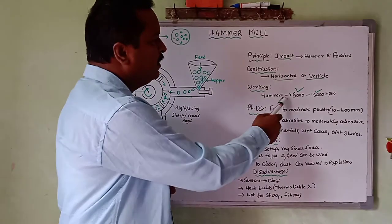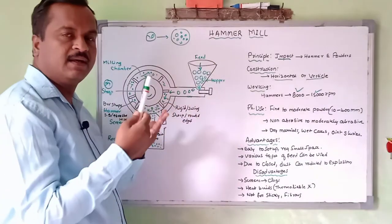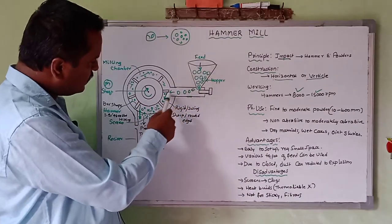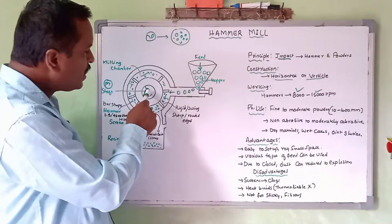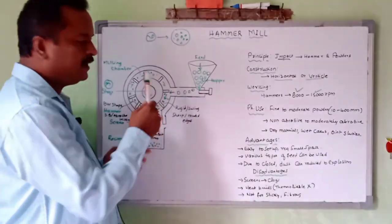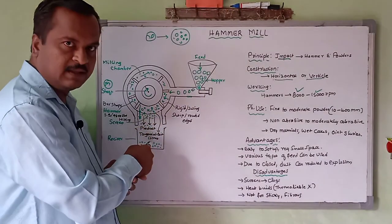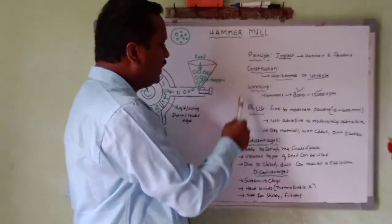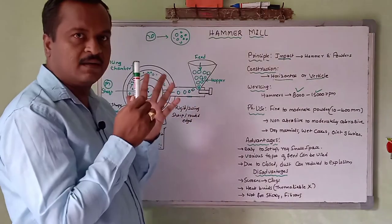In working: the hammer operates at 8,000 to 15,000 RPM speed. The particle is in the middle of the milling chamber, and due to rotation the hammers hit and break down the particle into small particles. The shaft and motor are attached — as the shaft rotates, the hammers hit the particles automatically, and big particles become small. The hammer mill is used for moderately fine to fine powder, with particle sizes from 10 to 400 mm.